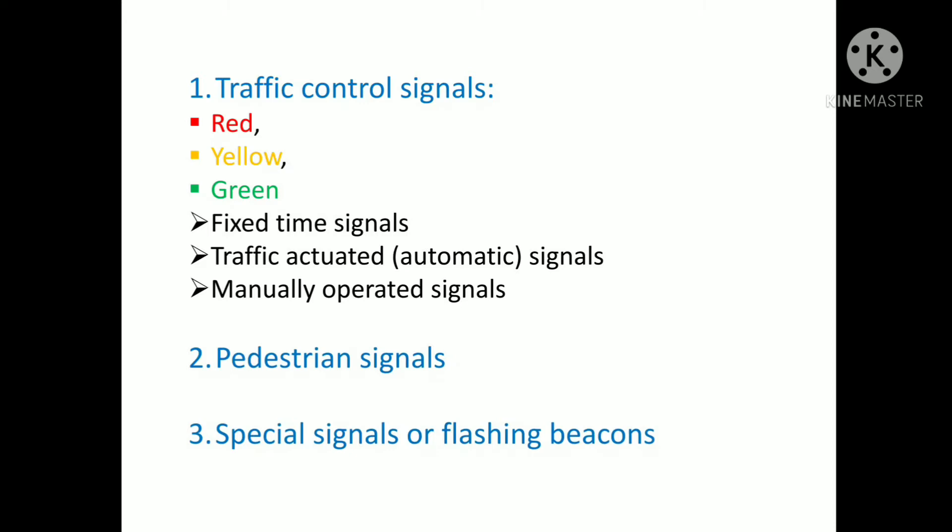Fixed time signals, traffic actuated signals, and manually operated signals. Let's see about fixed time signals. These signals are set to repeat regularly a cycle of red, amber, and green lights. Depending upon the traffic intensities, the timings of each phase of the cycle is predetermined. Fixed time signals are the simplest type of automatic traffic signals which are electrically operated.